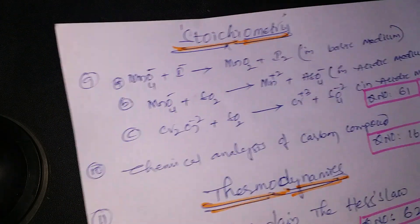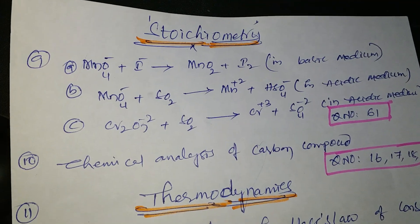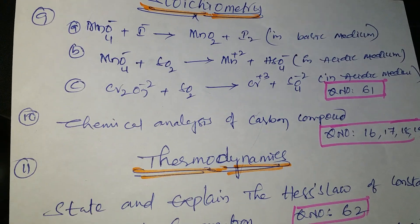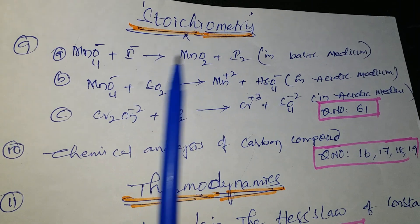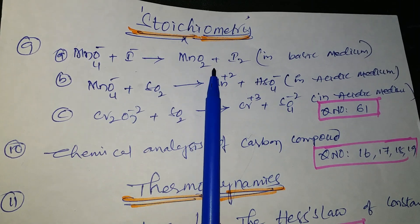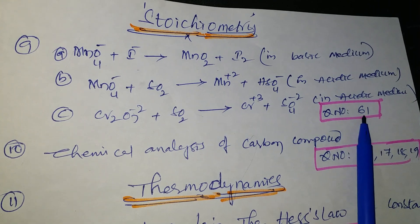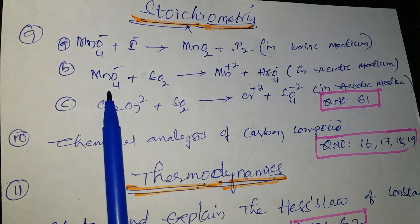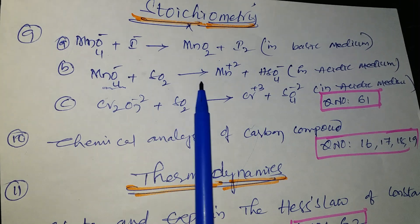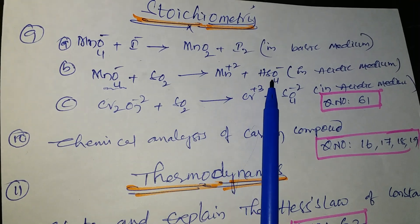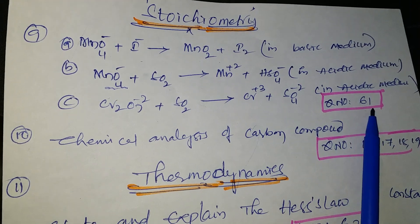Next lesson is stoichiometry. The ion electron method: MnO4⁻ + I⁻ → MnO2 + I2 in basic medium — question number 61 from the Telugu academic textbook. Next: MnO4⁻ + SO2 → Mn²⁺ + HSO4⁻ in acidic medium — also question number 61.